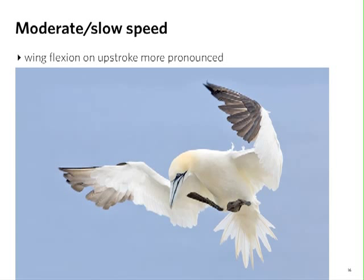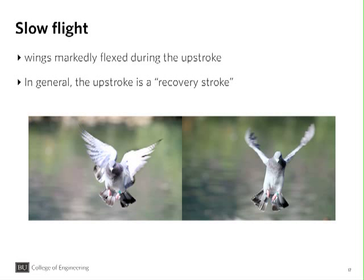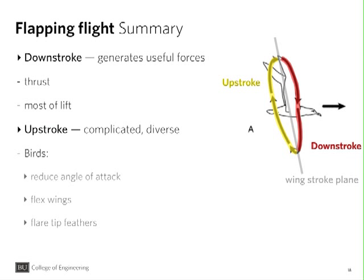Here is another picture of a bird in slow flight, where we see the bird flexing its wings. Wing flexion, together with feathering or change in angle of attack, are used by different birds at different flight speeds. In slow flight, typical of pigeons, there is a much more marked flexing during the upstroke. In summary, the downstroke generates most of the useful forces — thrust and most of the lift — while in the upstroke there are varied strategies: reducing angle of attack, flexing the wings, or flaring the tip feathers.